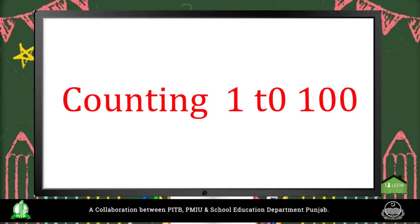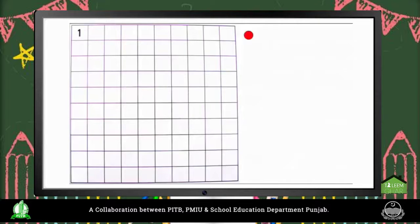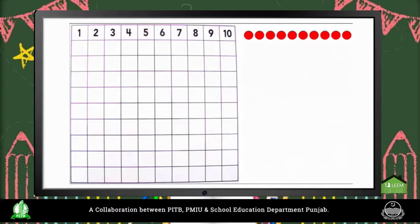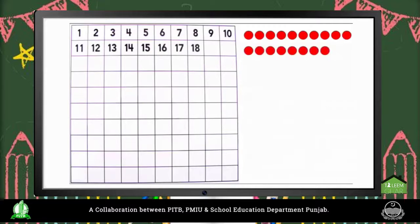Let's go — let's read counting through an animated video once more. 1, 2, 3, 4, 5, 6, 7, 8, 9, 10, 11, 12, 13, 14, 15, 16, 17, 18, 19, 20.